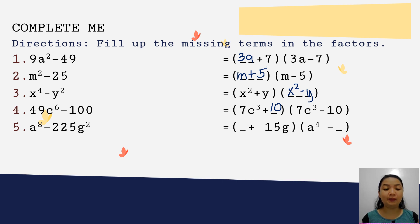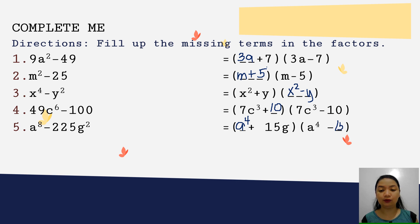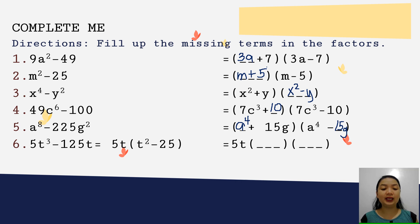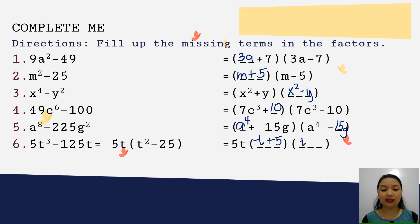For a to the 8th minus 225g squared, the factors include a to the 4th and 15g. And lastly, for 5t cubed minus 125t, we first factor out 5t, leaving t squared minus 25. The factors of t squared minus 25 are t plus 5 and t minus 5.